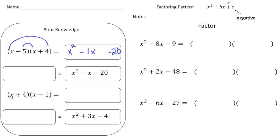Now let's do the one down here also. So x plus 4 times x minus 1. So if we use FOIL, that's going to be x squared. 4 times negative 1 is negative 4. And to get the middle term, we have to do the inside, so that'll be 4x, and then the outside, which is negative x. Add them together and we'll get a 3x.